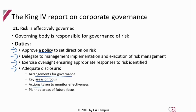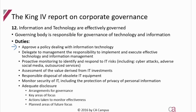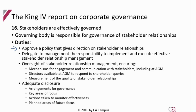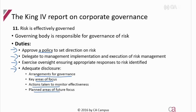And they must make sure there's adequate disclosure: the arrangements for governance, key focus areas, action to be taken, and planned future areas. Approve the policy, delegated to management, have adequate disclosure — for laws and regulations delegated to management, have general oversight and adequate disclosure. The exact same disclosure. And for stakeholders, approve the policy delegated to management, have general oversight and have adequate disclosure — the exact same disclosure.